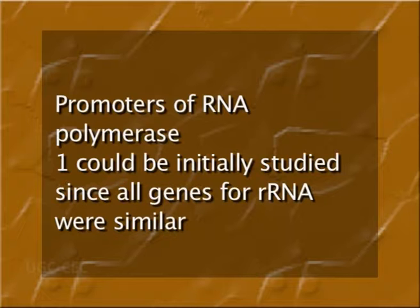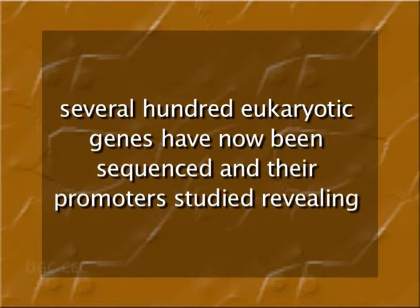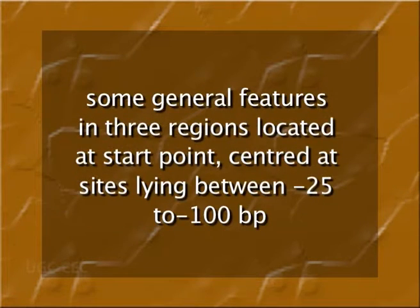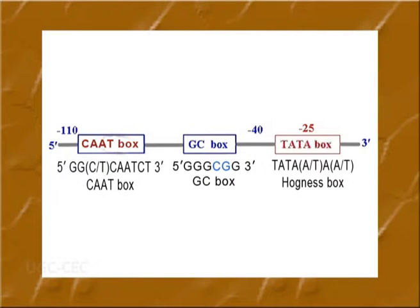Promoters of RNA polymerase I were initially studied since all genes for rRNA were similar. Promoters for RNA polymerase III had some unusual downstream promoters. However, for RNA polymerase II, several hundred eukaryotic genes have now been sequenced and their promoters studied, revealing some general features in three regions located at the start point, centered at sites lying between minus 25 to minus 100 base pairs.